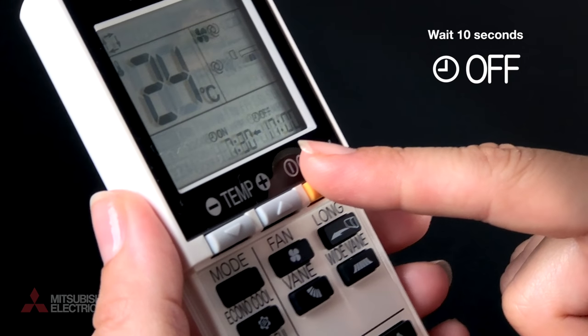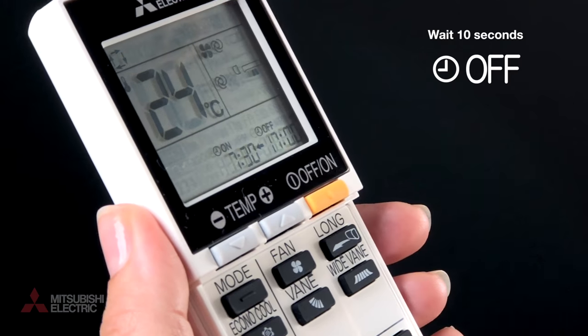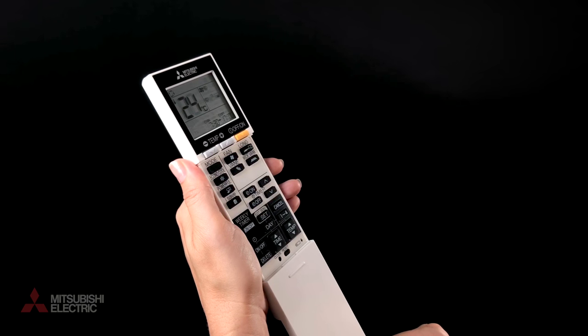Wait 10 seconds for the timer off symbol to stop flashing. Now the air conditioner will automatically switch on and off at the programmed times.